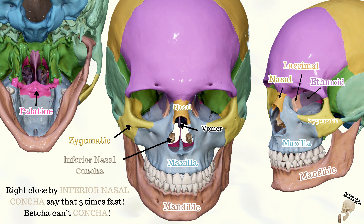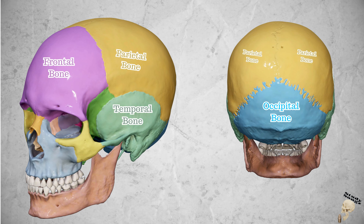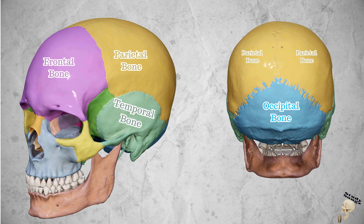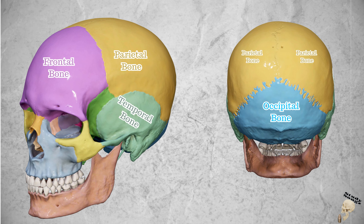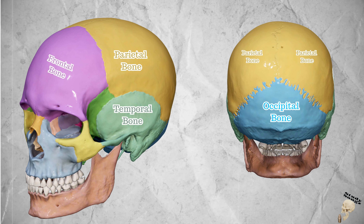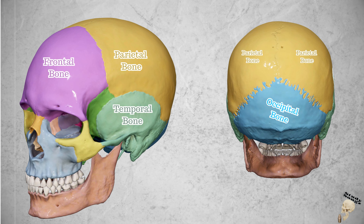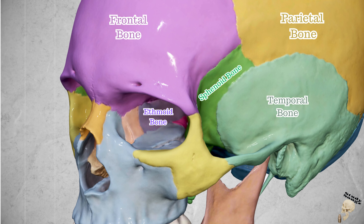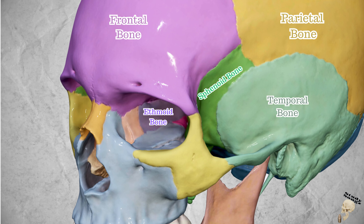On the sides and high are parietal bones, and on the sides and low are temporal bones. Sitting on the front is the frontal bone, and opposite side is occipital bone. Behind the eye is the sphenoid bone, and behind the nose is the ethmoid bone. Cranial bones got 8 on the skull.